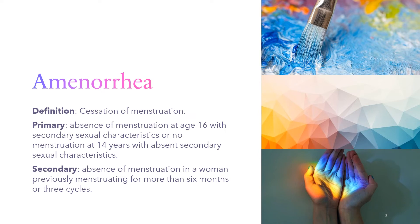Amenorrhea is simply defined as a cessation of menstruation. It can be broadly classified into primary and secondary amenorrhea. Primary amenorrhea is the absence of menstruation at age 16 with secondary sexual characteristics, or no menstruation at 14 years with absent secondary sexual characteristics. Secondary amenorrhea is defined as the absence of menstruation in a woman previously menstruating for more than six months or three cycles.